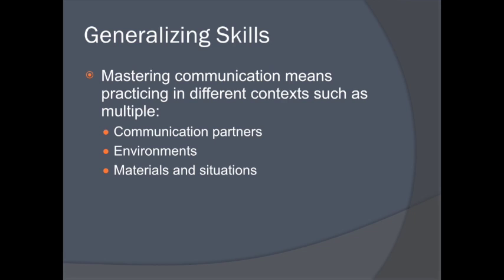One way to do this is by sabotaging the environment — in other words, restricting access to items students need or want so that they have to use communication requests instead. This also means using communication phrases in different situations and with different items. For example, rather than only requesting goldfish from the same paraprofessional each snack time, students should practice requesting all kinds of highly engaging objects and activities with as many different staff and peers as possible. Practicing in diverse situations with many different materials and conversation partners will help students generalize communication skills, meaning they'll be able to use them to communicate effectively throughout their lives, rather than being prompt dependent on certain adults.